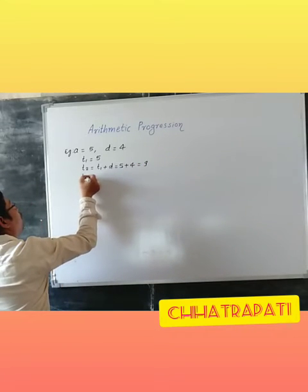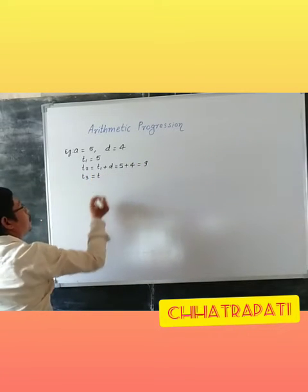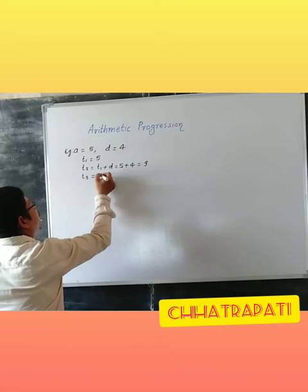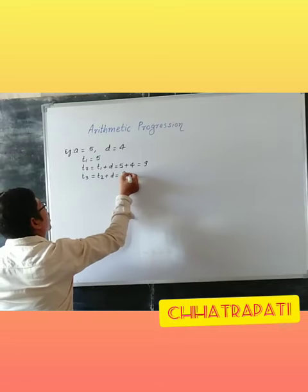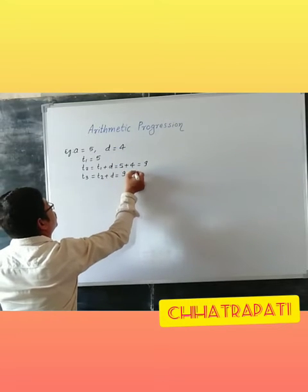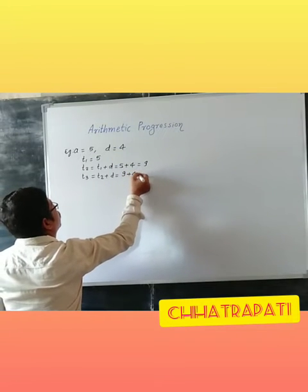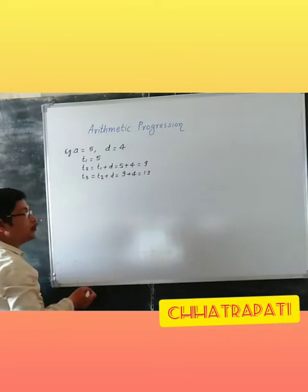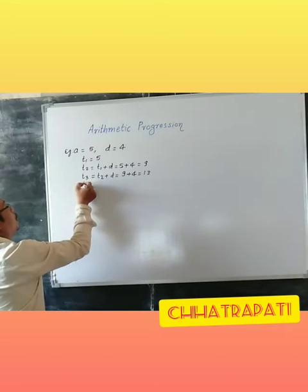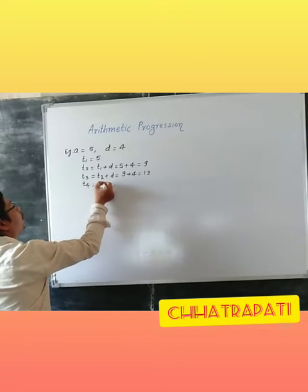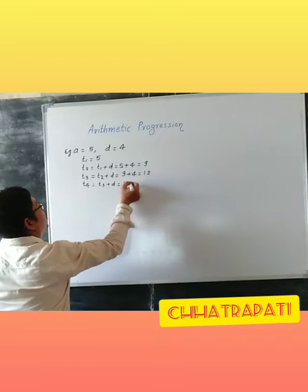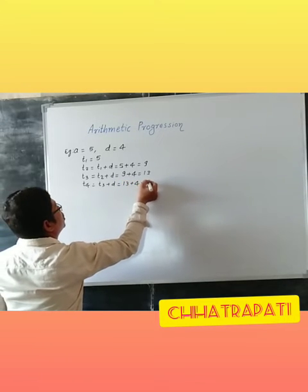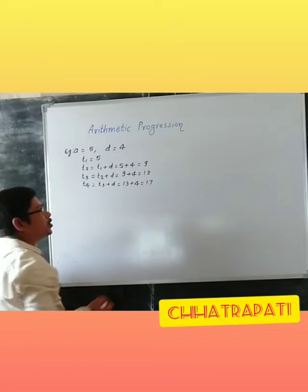If we require the third term, then we can write T2 plus common difference, that is 9 plus 4, which is 13. T4 is equal to T3 plus D, that is 13 plus 4, which is equal to 17.